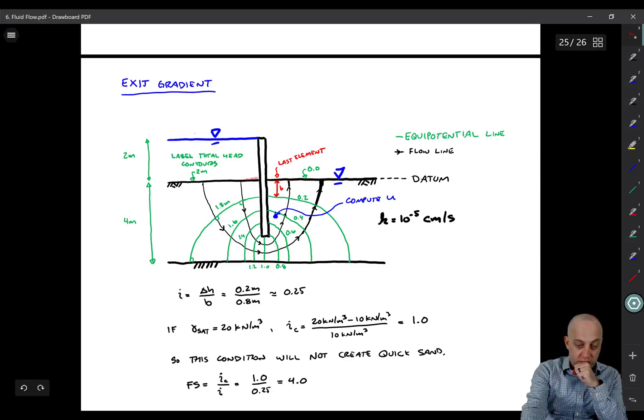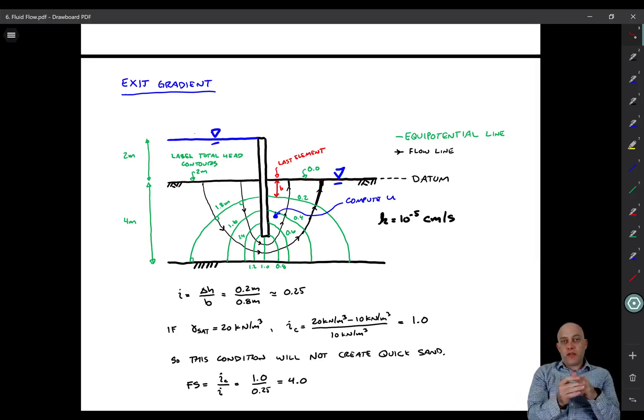We know the total head on this line is 2 meters and the total head on that line is 0 meters. So we have boundary conditions over the full width of the domain. All we have to do is construct the flow net to interpolate at the points in between.